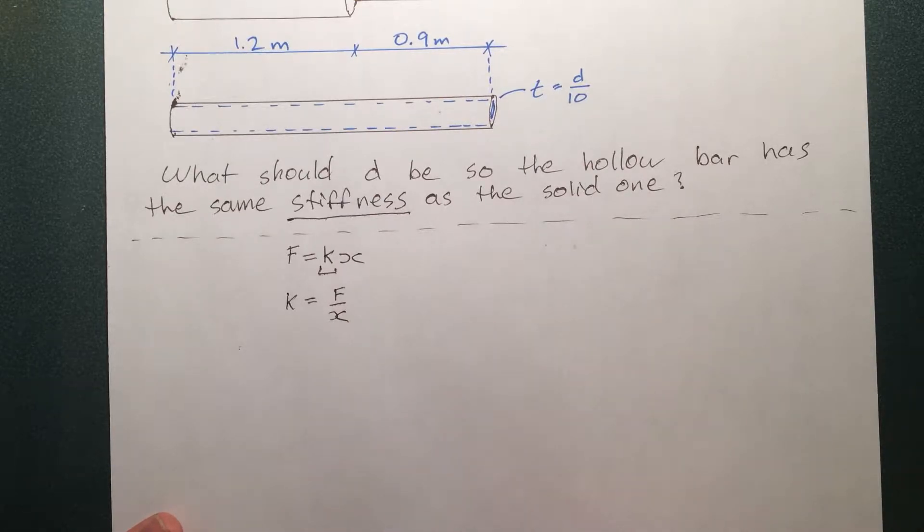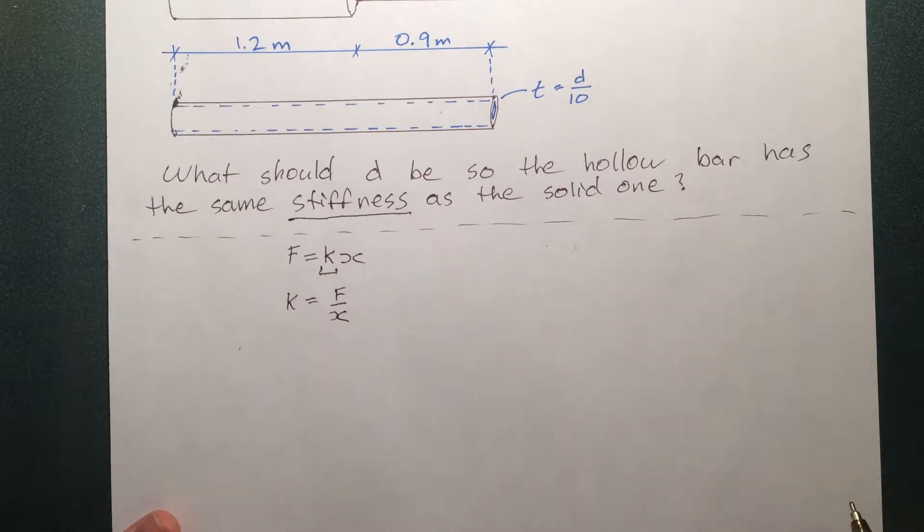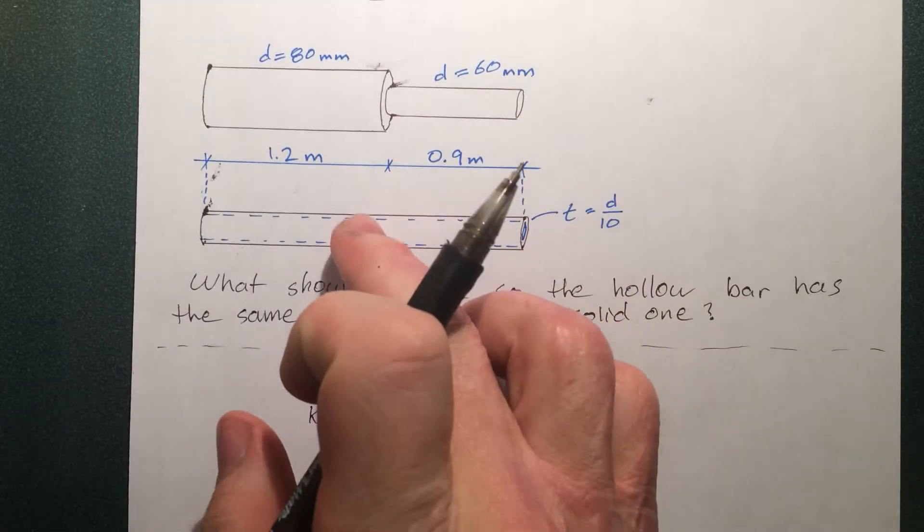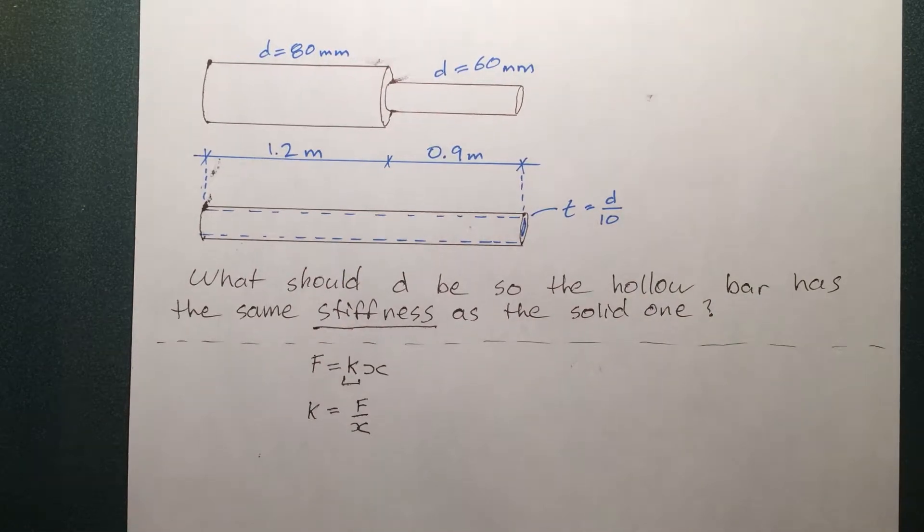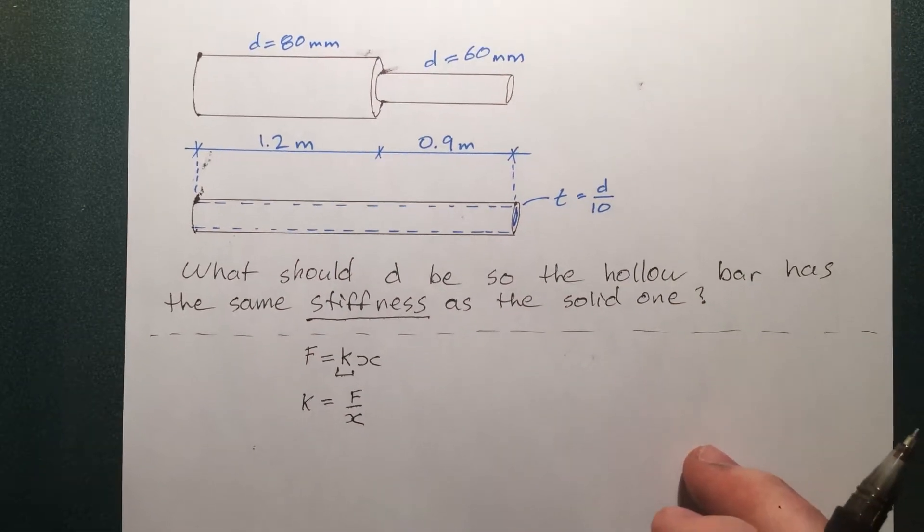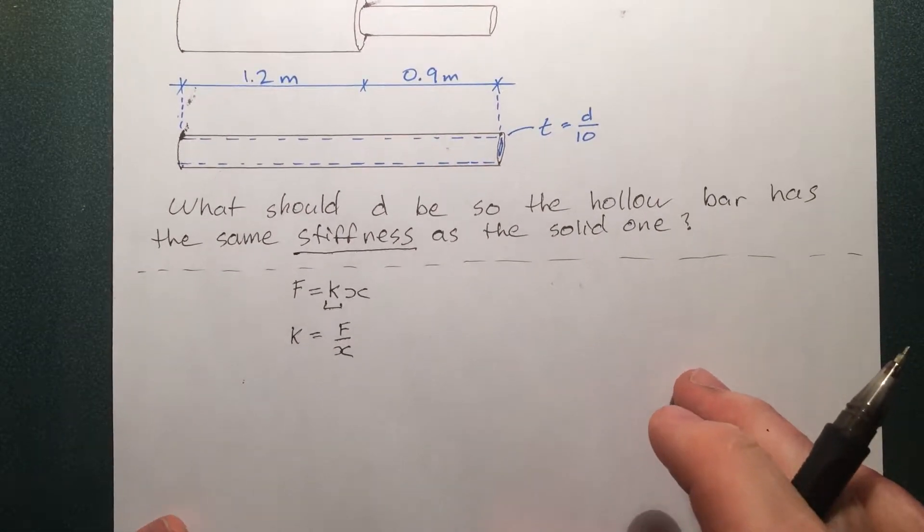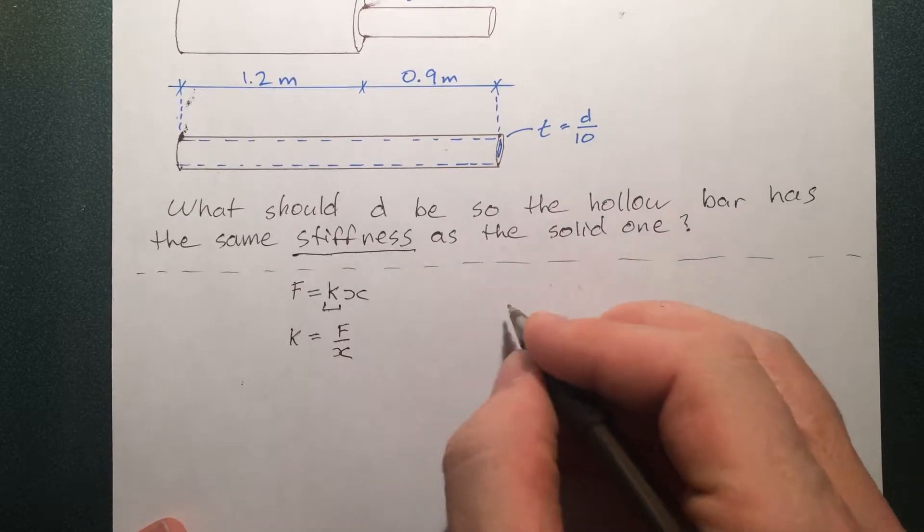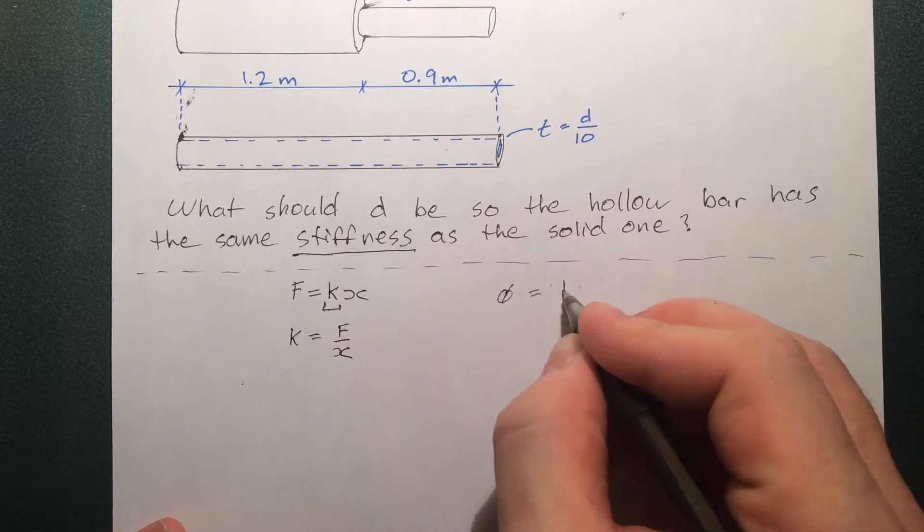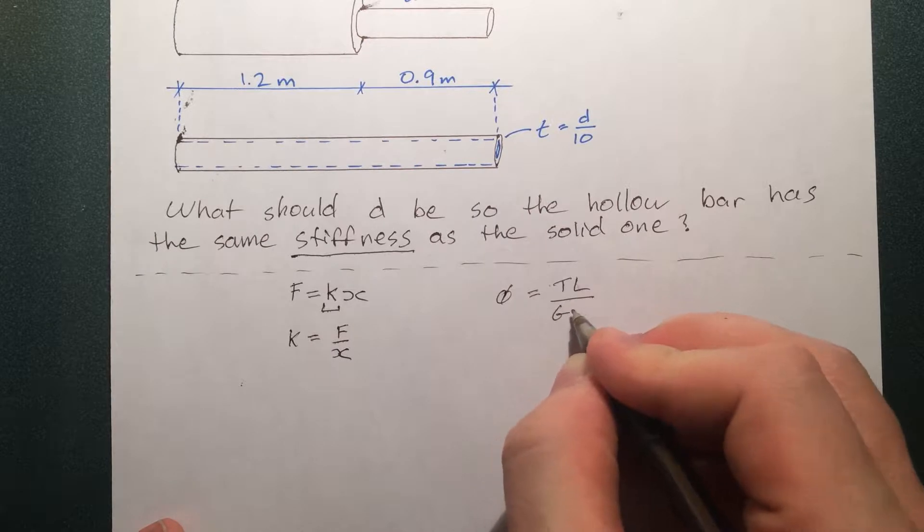So let's compare it to our world of torsional bars. And in this case, everything is discrete. Nothing is changing as a function of X. So we don't need to use the differential form of the d phi and the dX. So I'm just going to use the regular form. Phi is T L over G J.